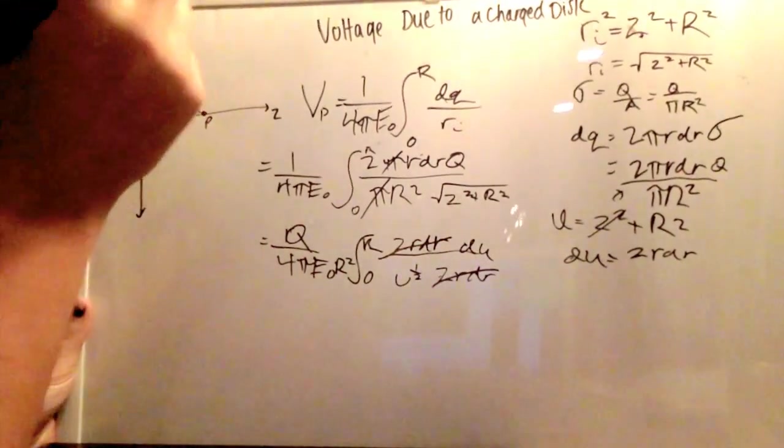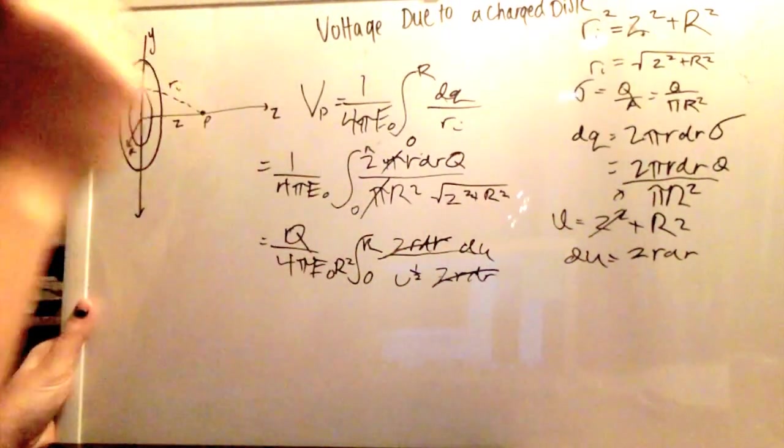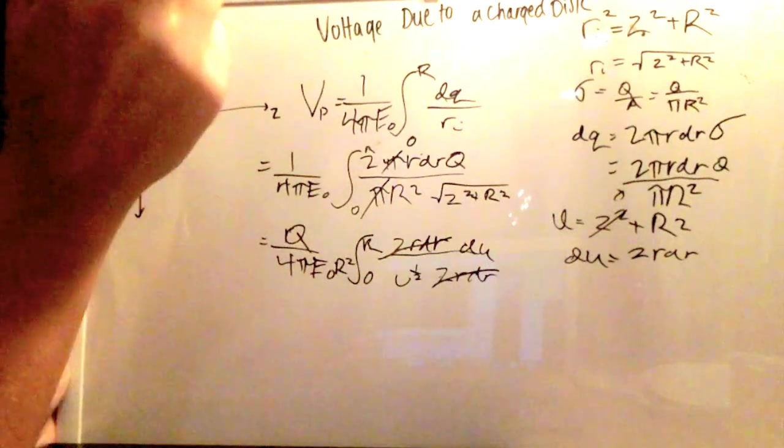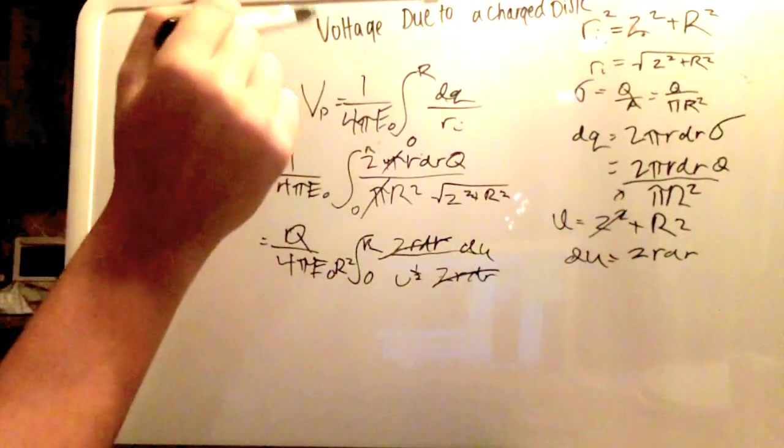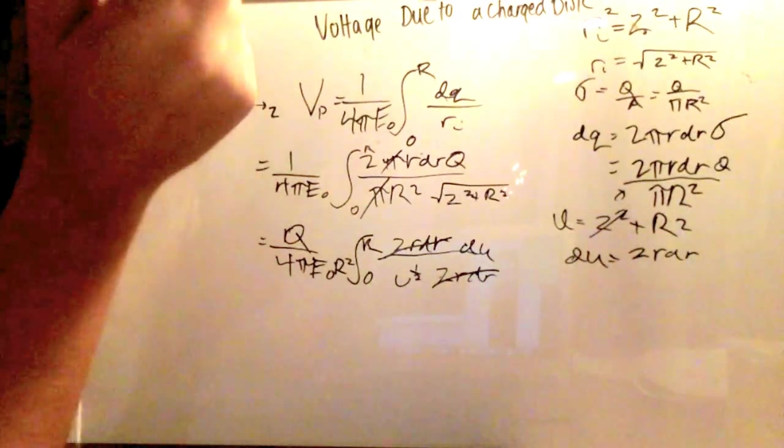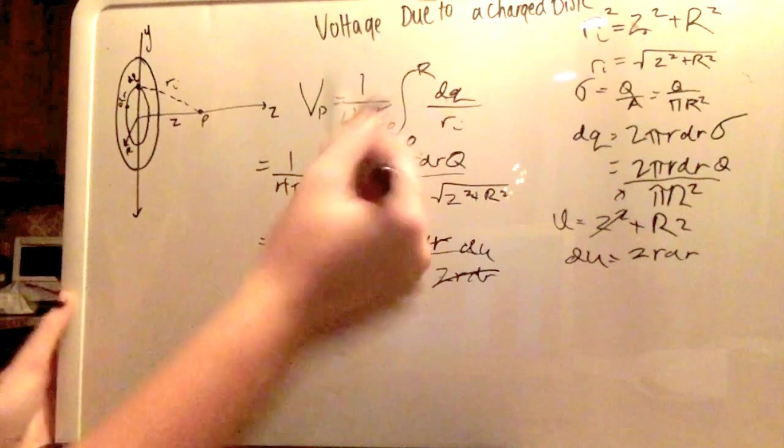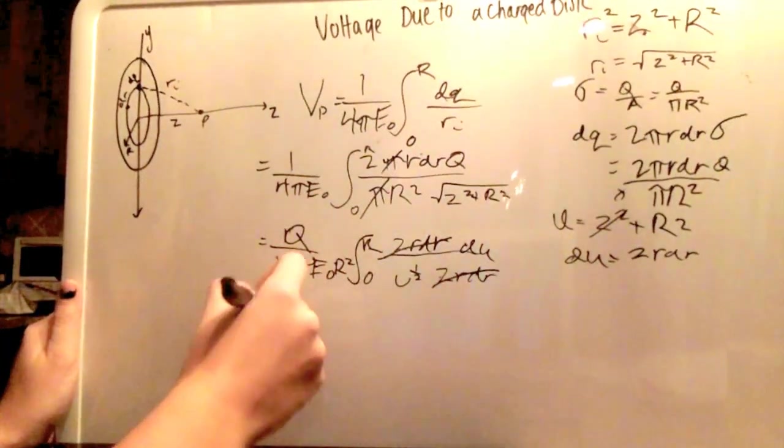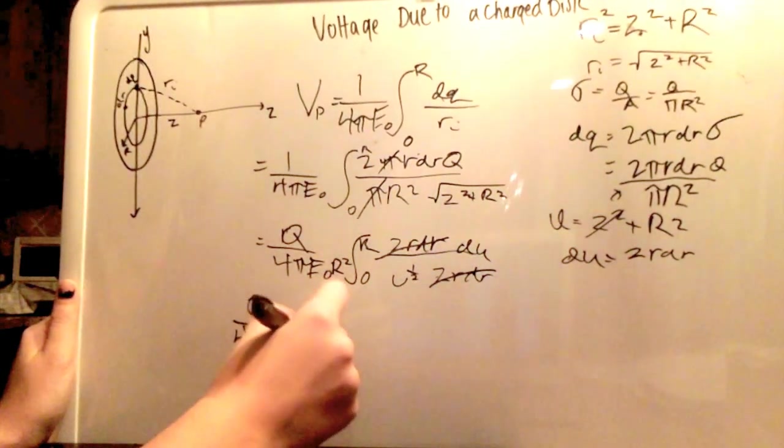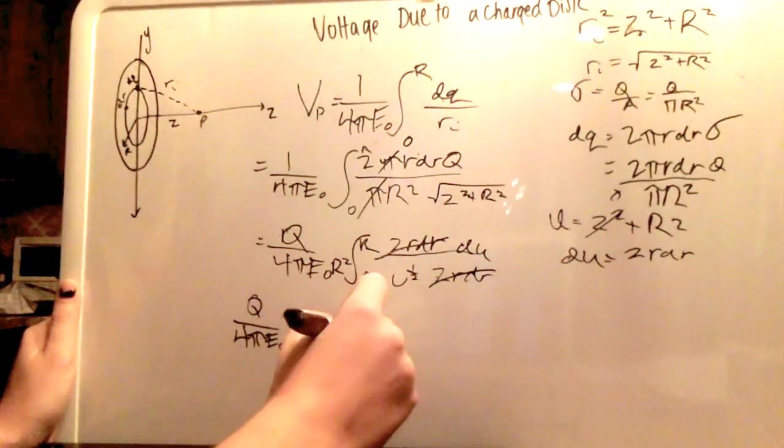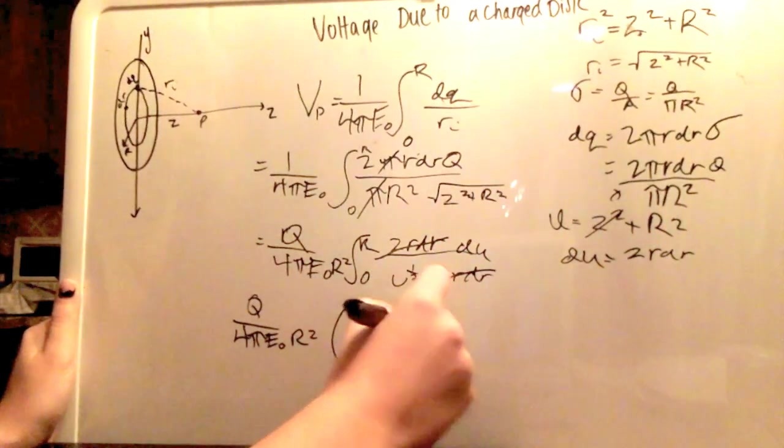Now to integrate that, you would bring it up to the top, that's u to the negative 1 half, and then integration is you add 1, so negative 1 half plus 1 is 1 half, then you multiply by the inverse of that, or divide by it, so divide by 1 half is the same as multiplying by 2. So the whole thing is going to be q over 4pi e0 r squared, 2u to the 1 half, from 0 to r.